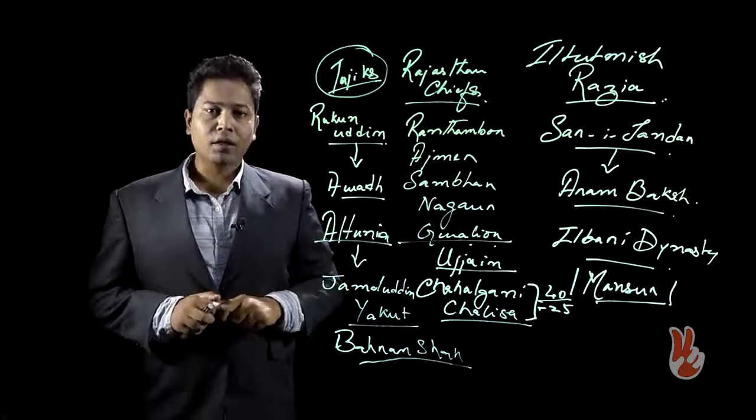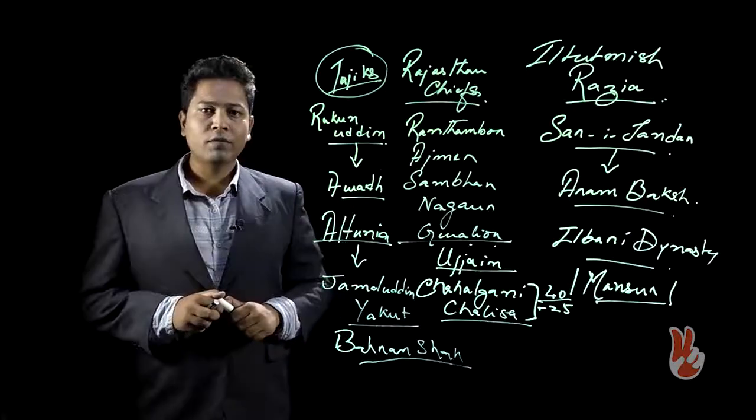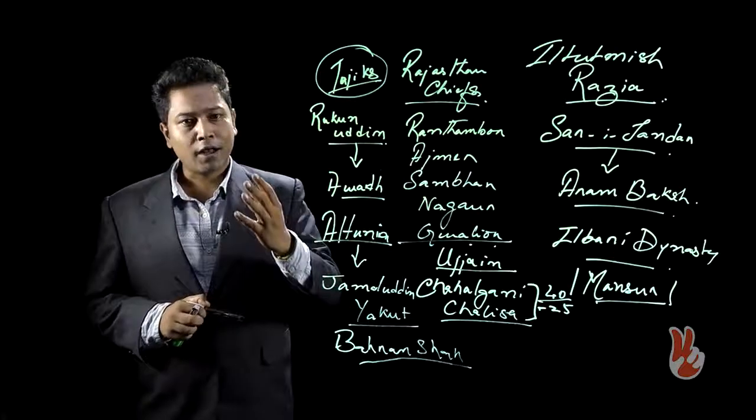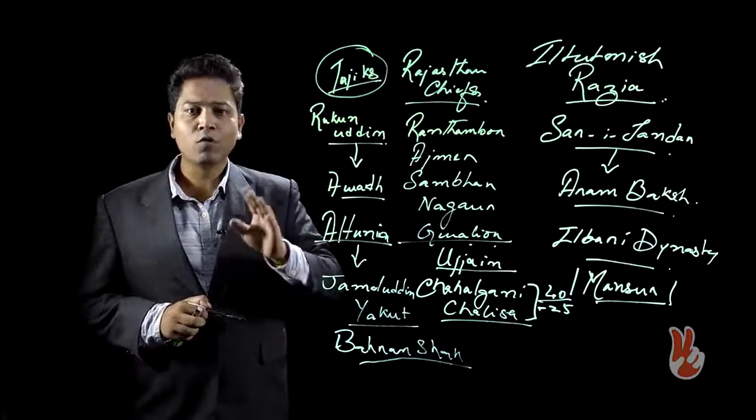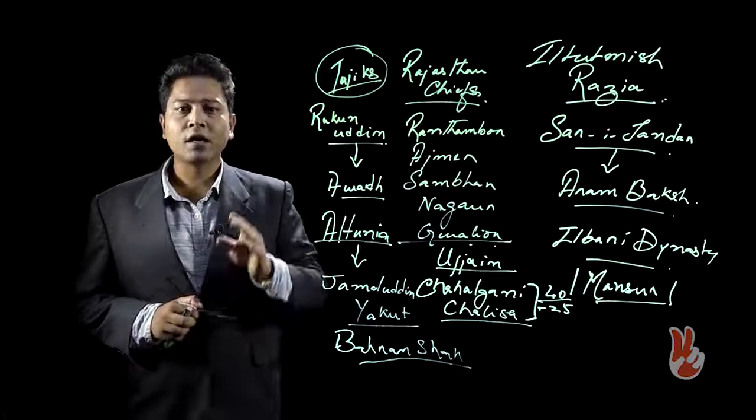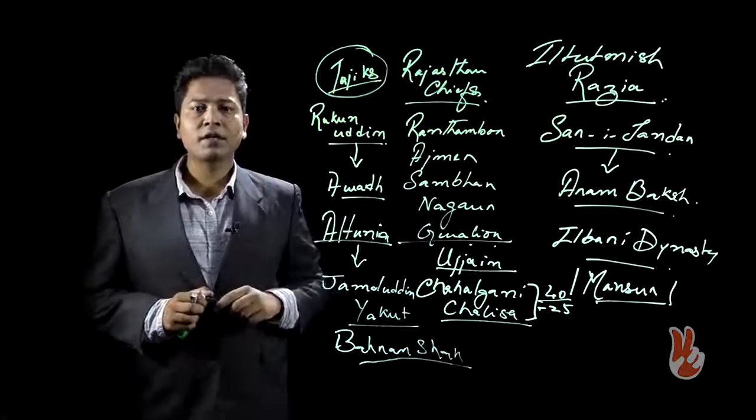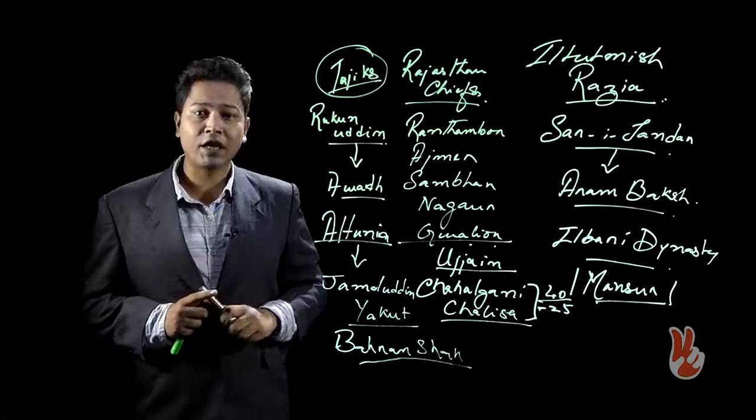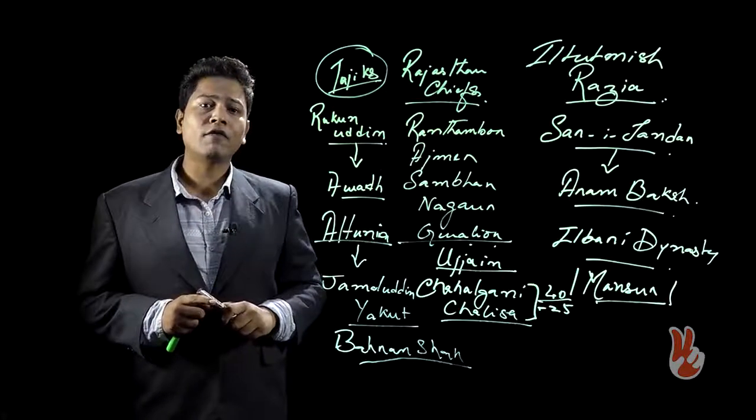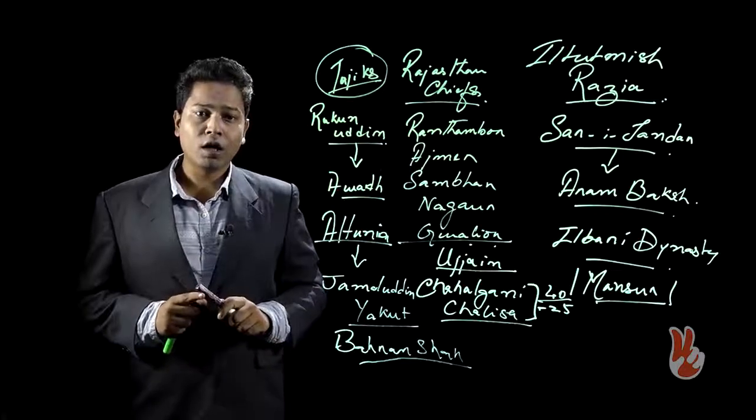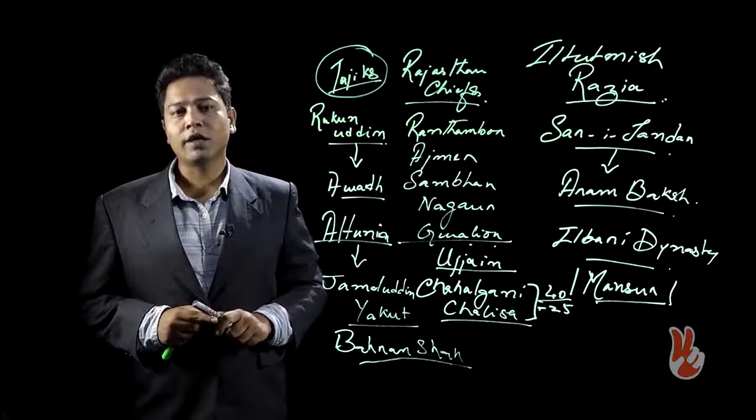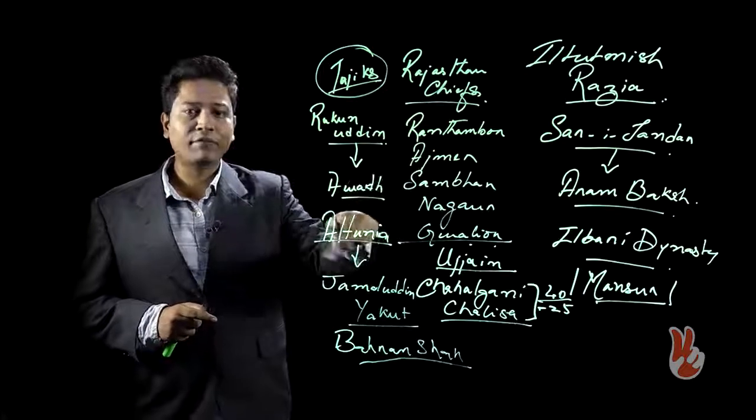It should be remembered about Muslim law and about Muslim rules of kingship is that there are certain stipulations about who can be or who can remain a Sultan. If a person is blind, he cannot remain a Sultan. If a person has been taken captive, he cannot remain a Sultan. Or if a person is below a particular age, that is, if a person is a minor, he cannot remain a Sultan.